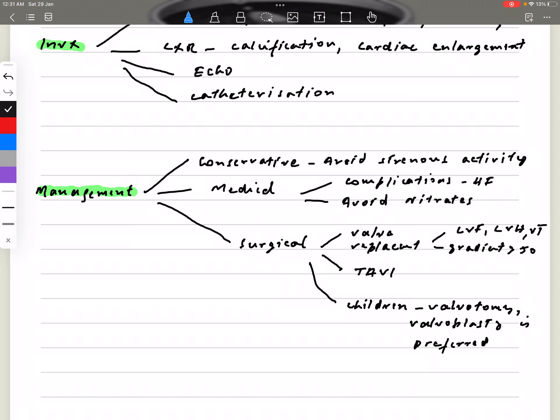Coming to the surgical valve replacement: if the patient has left ventricular hypertrophy, left ventricular failure, ventricular tachycardia, or the gradient is more than 50—that is, the patient is symptomatic—then we have to do some kind of surgery. There are other options available called TAVI, which is trans-aortic valve implantation, normally done for patients who are unfit for surgery. These procedures can be done.